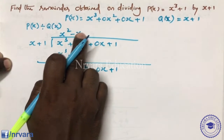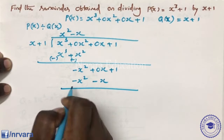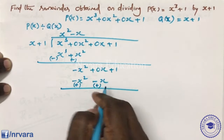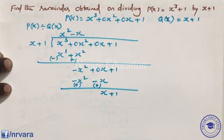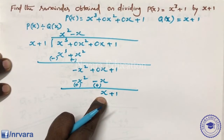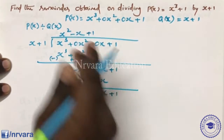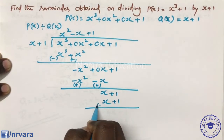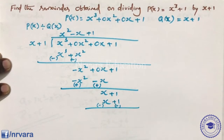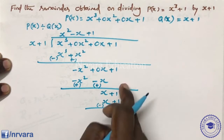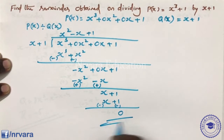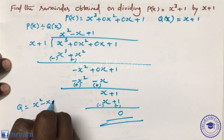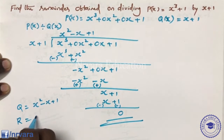Minus x into x gives minus x square; sign change, plus plus. Remainder: minus x. Minus x into x gives result. The quotient is x squared minus x plus 1. Remainder is 0.